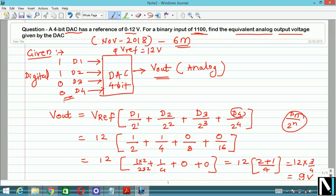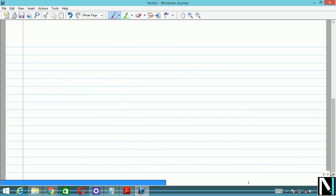So your Vout value here will be 9 volt. The output voltage, analog output voltage, will be equals to 9 volt for equivalent binary input of 1100.